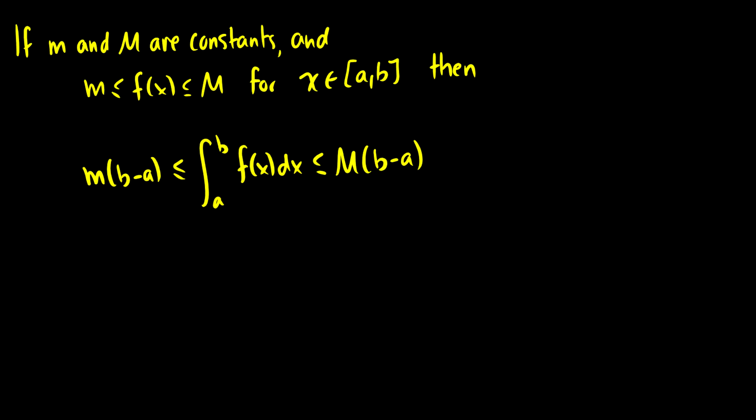What's really important is this concept: if we have two numbers, little m and big M, and f(x) is between them in some interval, then the area underneath the curve is going to be between two rectangles — one whose height is determined by little m, and one whose height is determined by big M.